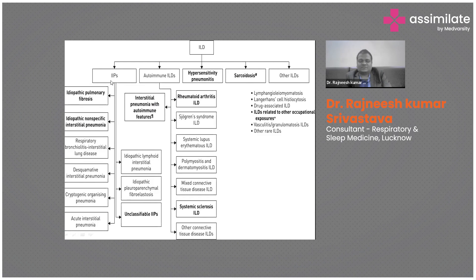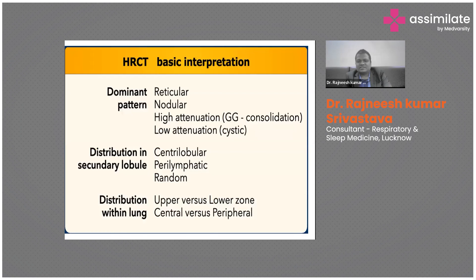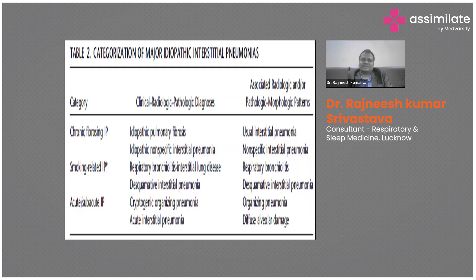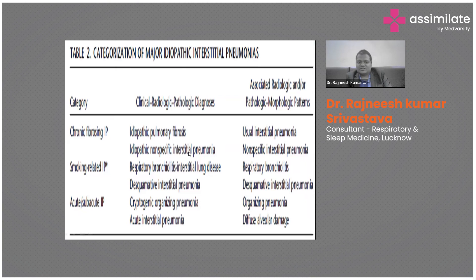The main concern is idiopathic interstitial pneumonias, like idiopathic pulmonary fibrosis. Idiopathic interstitial pneumonias are classified based on presentation and patterns. It can be chronic fibrosing type, which contains idiopathic pulmonary fibrosis or idiopathic non-specific interstitial pneumonia. It may be smoking-related, which contains RB-ILD and DIP, or it may be acute and subacute, which contains cryptogenic organizing pneumonia and acute interstitial pneumonia.